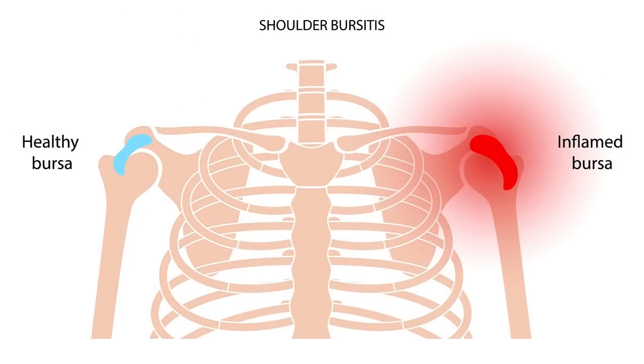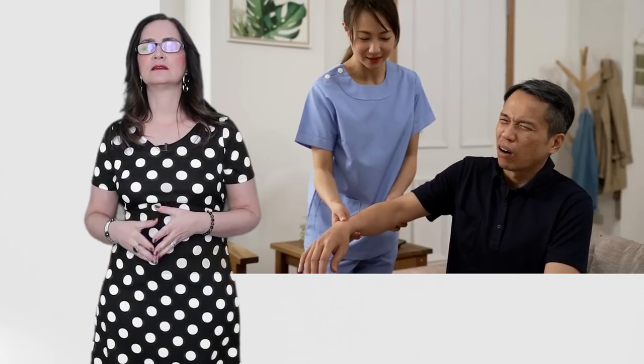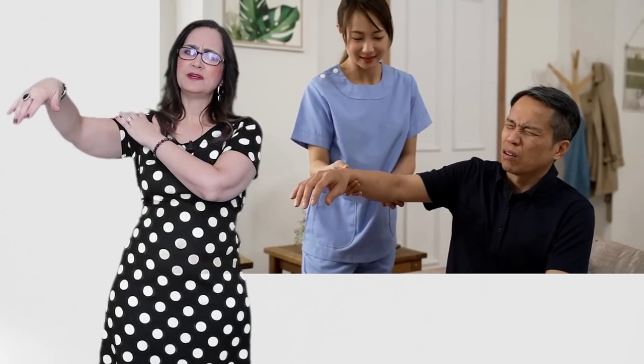We also have pockets of fluid between the tendons and the bones to reduce the friction. They are like cushions. If they get inflamed, they hurt, and we call this bursitis. And one of the main symptoms is when the person raises their arm and they feel an acute sharp pain in the shoulder, which is very typical of a rotator cuff disease.